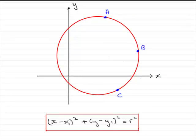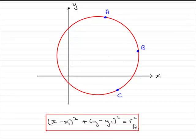Welcome to this tutorial on finding the equation of a circle when you're given three points, let's say a, b and c, that the circle has to pass through. You should know that the equation of a circle has this particular format: x minus x1, all squared, plus y minus y1, all squared, equals the radius squared. So what you're going to need to do is find the centre of the circle and the radius r.